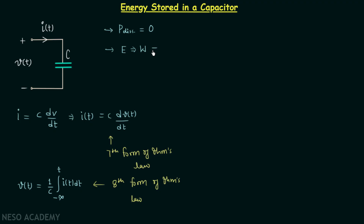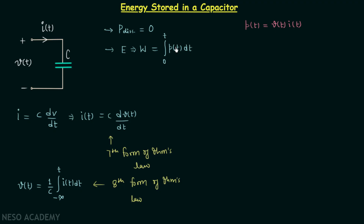So if we can calculate the work done, we will have the energy stored in the capacitor. Work done is equal to the integration from zero to t of p(t) dt. We have derived that p(t) equals voltage v(t) multiplied by current i(t). So let us write v(t)·i(t) in place of p(t).